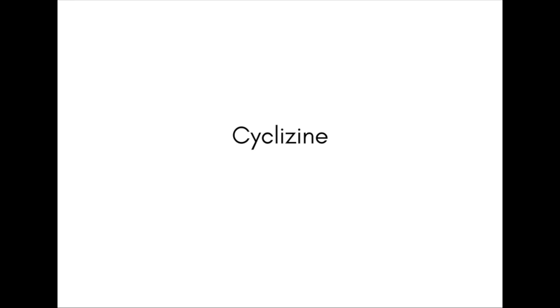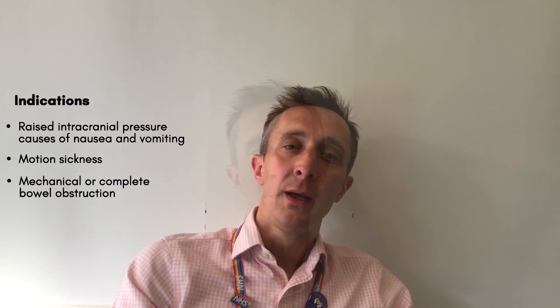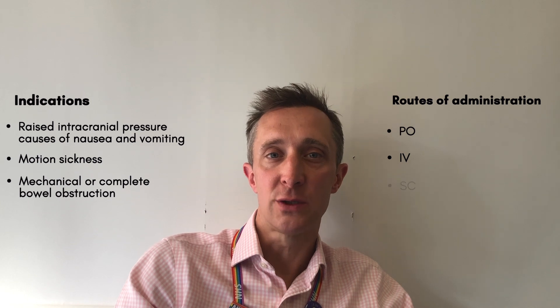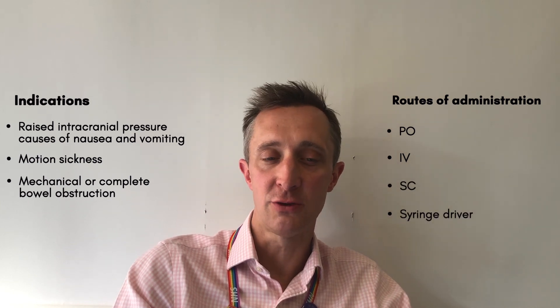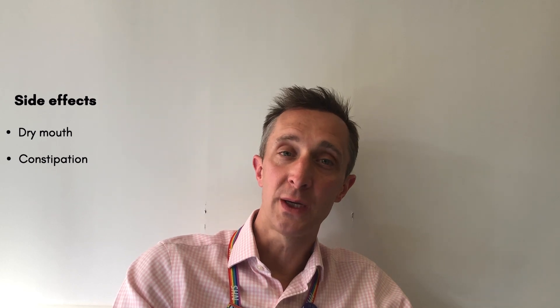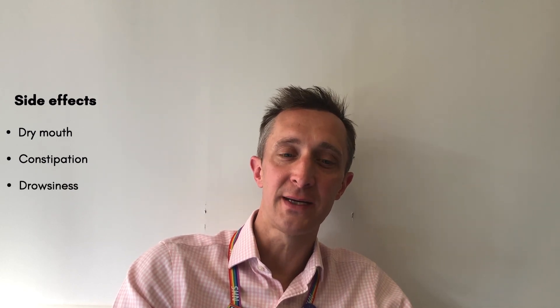The next drug is cyclizine. Cyclizine is a centrally acting antiemetic that works through histamine. Its indications are for nausea and vomiting caused by raised intracranial pressure, motion sickness, and mechanical or complete bowel obstruction. It can be given orally or parenterally — intravenously, subcutaneously, or via a subcutaneous syringe driver. Side effects are anticholinergic, such as dry mouth and constipation, and antihistaminic effects such as drowsiness.